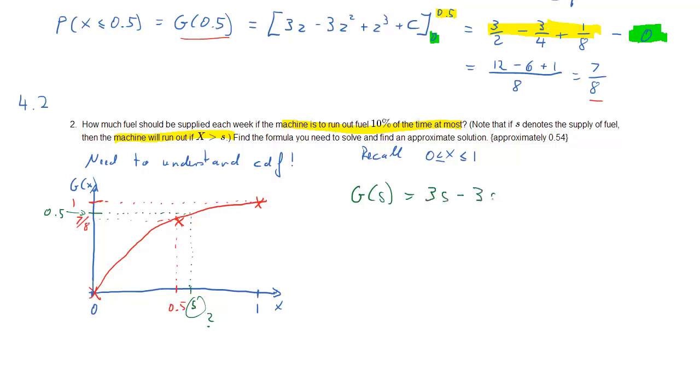So the g of s, we previously figured out, was just 3s minus 3s squared plus s cubed. And we want this to be 0.9. Why is that the question we need to solve? So we're basically saying that g of x smaller or equal to s should be 0.9. The question really states, give us the probability that x is larger than s should be 0.10. But that's, of course, just the opposite of the probability that x is smaller or equal to s is equal to 0.9. Now, we basically need to solve for s in this cubic equation.